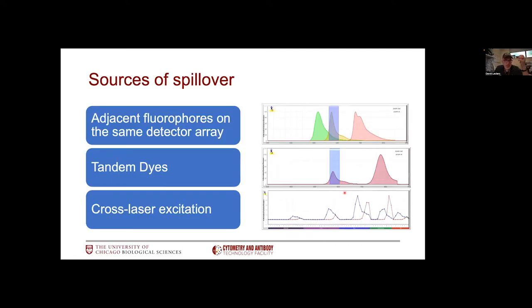There are different sources of spillover. The most common one is where a signal excited by a specific laser beam will bleed in the adjacent detectors from the same detector array. However, there are other sources. One of them would be the use of tandem dyes. Tandem dyes are very noisy molecules built from two fluorophores attached to one another. One fluorophore will accept the energy from the laser beam and transfer that energy through FRET to a secondary molecule, which will send out photons.